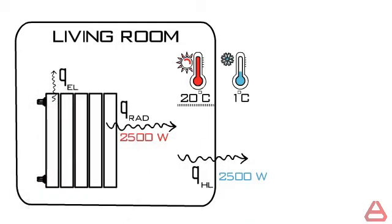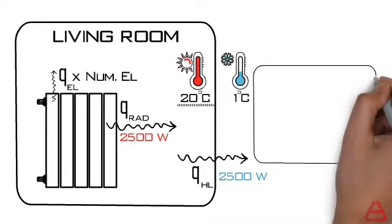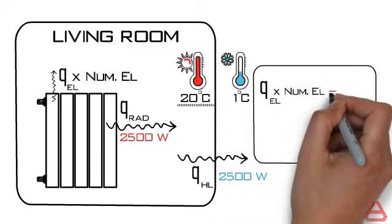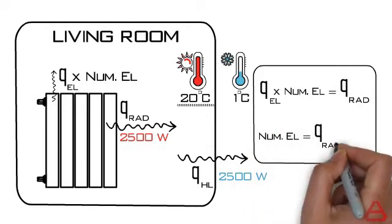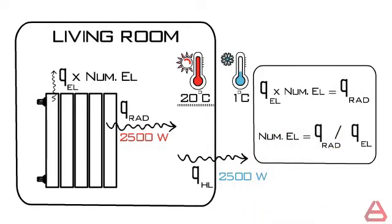The radiator power is equal to the power produced from a single element multiplied by the number of elements. So, if we knew the power produced by a single element, we can predict the number of elements needed inside our living room.